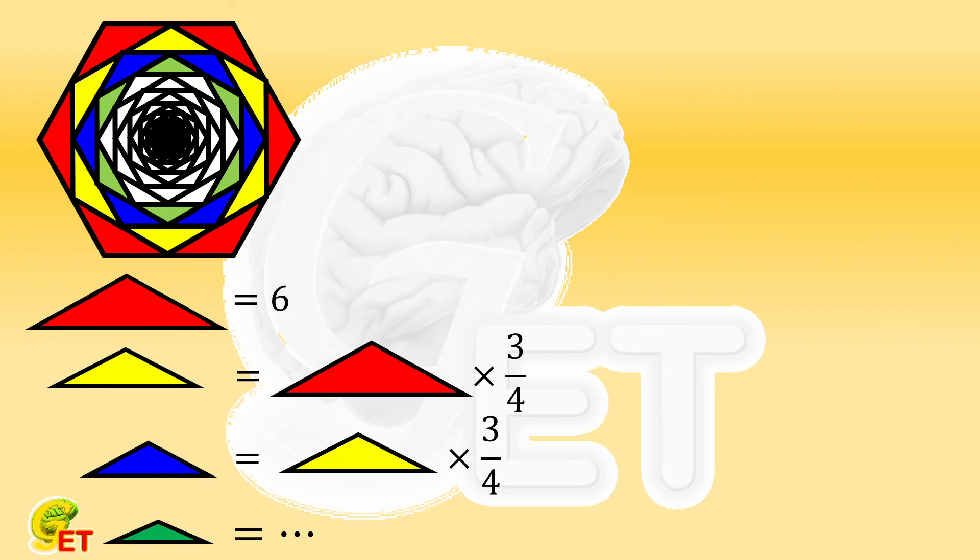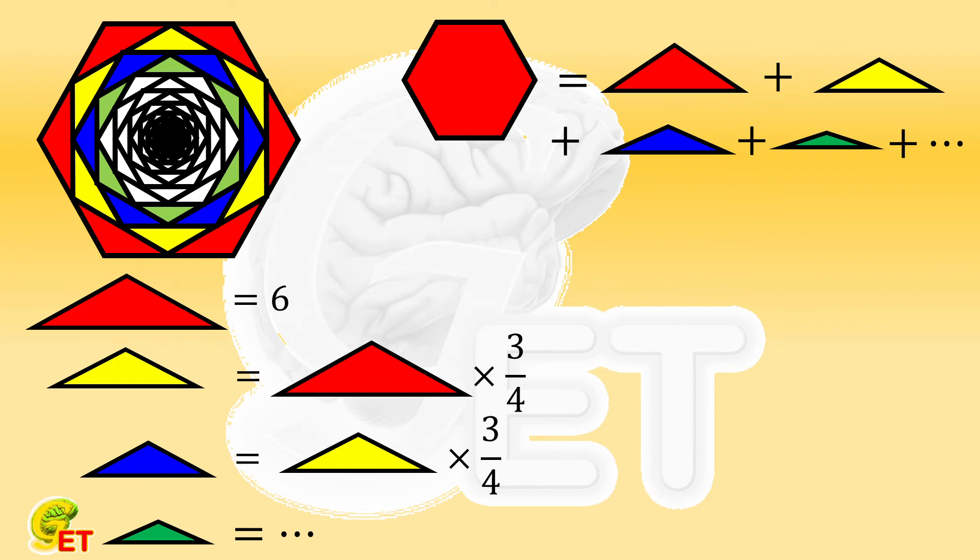We also know that the area of the red regular hexagon is the summation of the areas of all these triangles. And then what is unknown and asked about is the area of the red regular hexagon. This exercise thus becomes a problem of summing an infinite geometric series. How to address it?